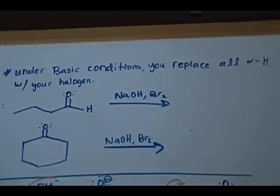So let's get started on this topic. So there's a little note I have up top. It says, under basic conditions, you replace all alpha H's with your halogen. So you assume an excess amount of your halogen, your reagents you have here. And you replace every single one of your alpha H's. There's no exception to the rule. Every single one.